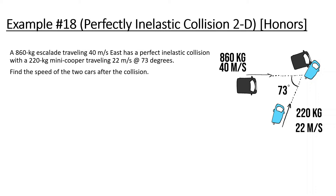An 860 kg Escalade traveling 40 meters per second has a perfectly inelastic collision with a 220 kg Mini Cooper traveling 22 meters per second at 73 degrees. Find the speed of the two cars after the collision. Since the Mini Cooper is moving at an angle, let's first find its X and Y velocity components: 22 times cosine(73) = 6.43 m/s in X, and 22 times sine(73) = 21.04 m/s in Y.